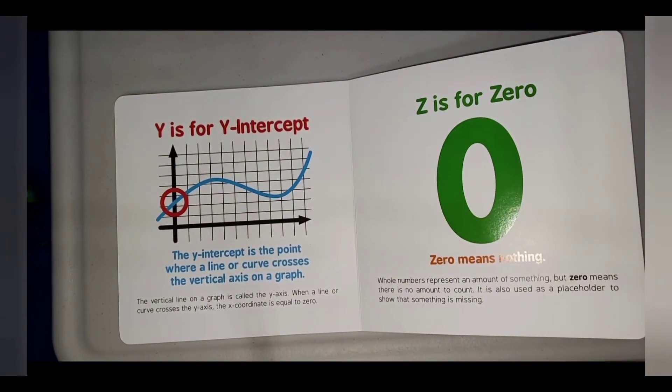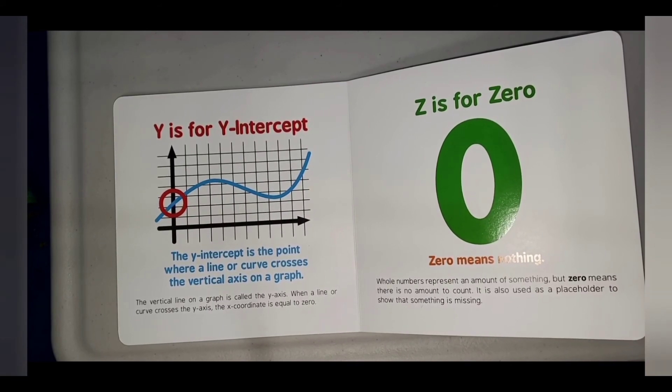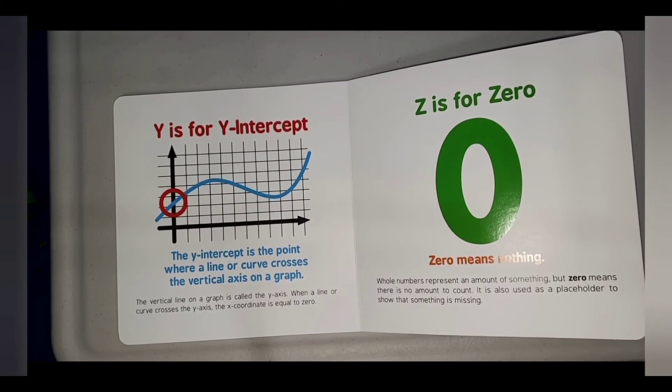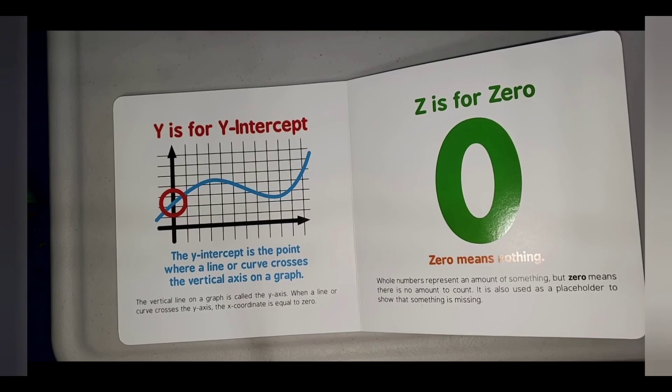Y is for Y-intercept. The y-intercept is the point where a line or curve crosses the vertical axis. The vertical line on the graph is called the y-axis. When a line or curve crosses the y-axis, the x-coordinate is equal to zero.